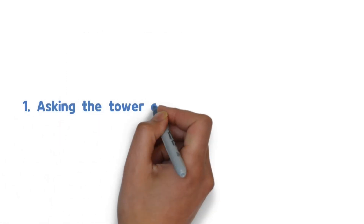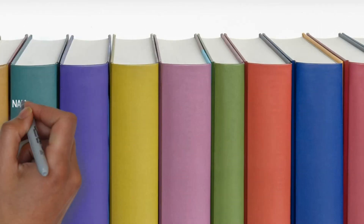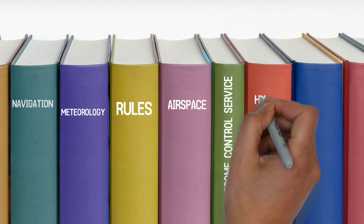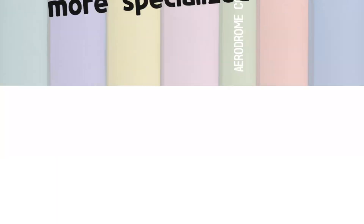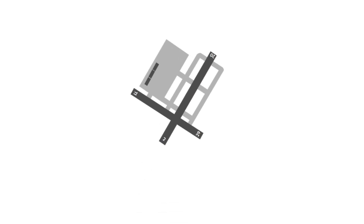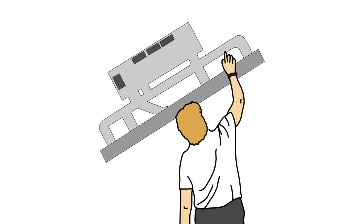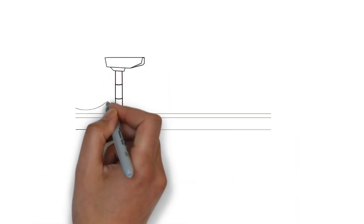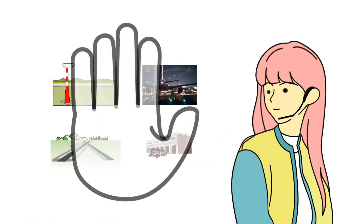1. Asking the Tower Controller vs. the Radar Controller. There is a lot of knowledge about air traffic control that tower controllers and radar controllers alike need to know. However, each of them has a more specialized field. Tower controllers have a detailed layout of the airport in their head — runways, taxiways, and ramps can be drawn even with their eyes closed. They are well aware of the equipment installed around the runway, the type of airport lighting system, the waiting area for the ground rescue team, and the mountains and buildings around the airport. In short, they know the airport like the back of their hands.